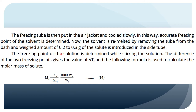We determine the freezing point of the solution — that is, the temperature at which the first crystal forms. The difference between the two freezing points gives the value of delta Tf. This is equal to T1 minus T2, where T1 is the freezing point of the pure solvent and T2 is the freezing point of the solution.